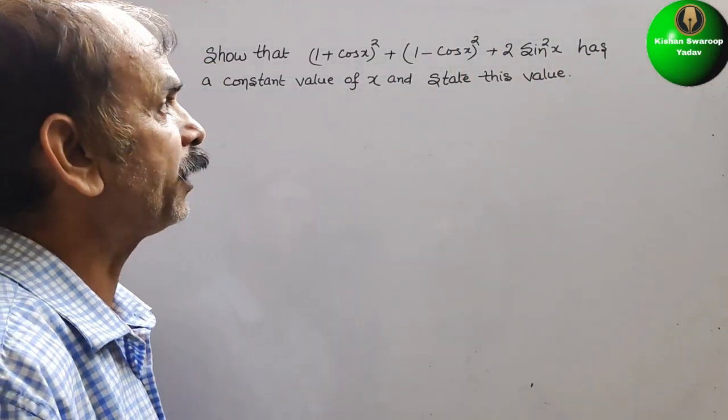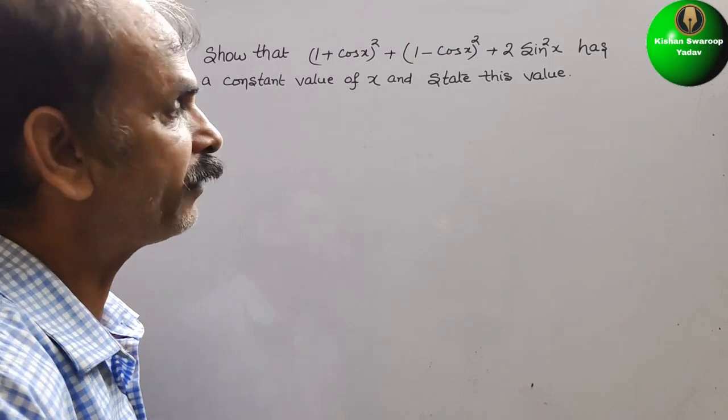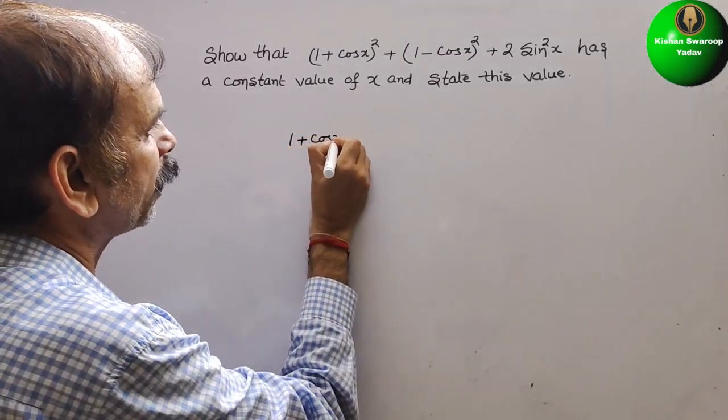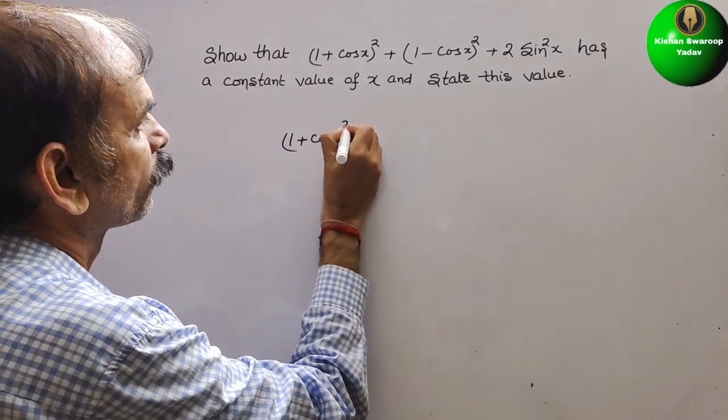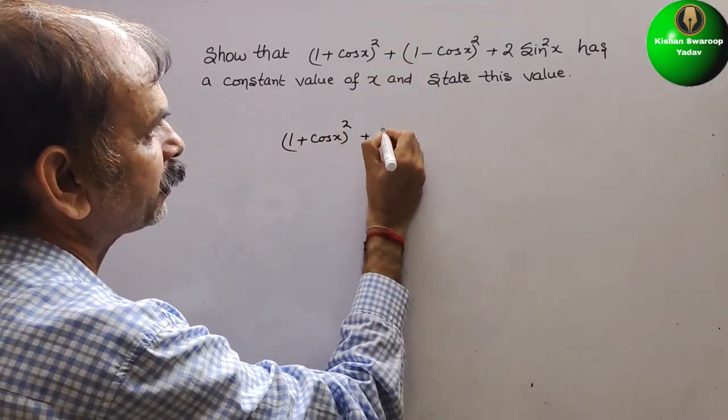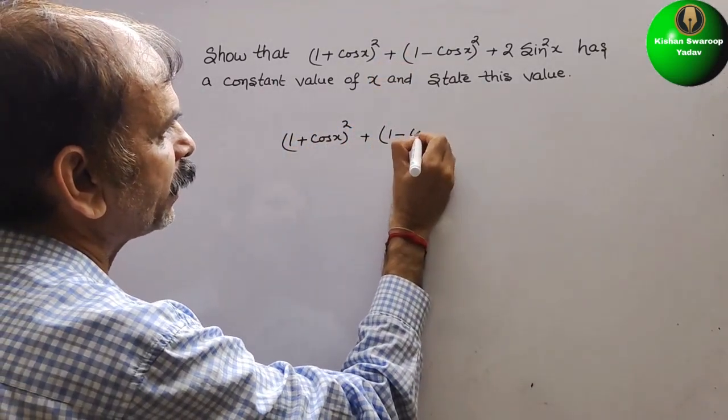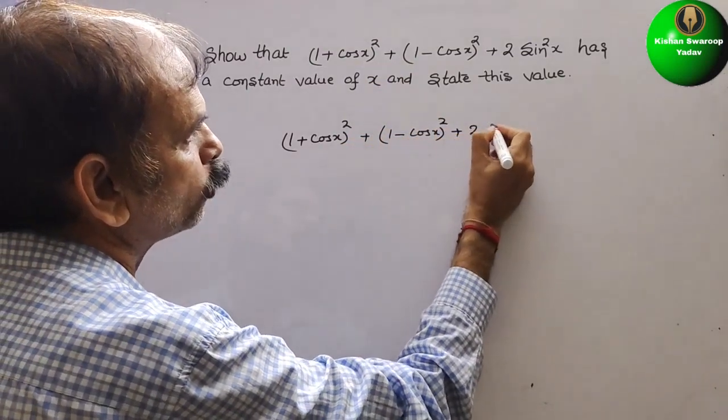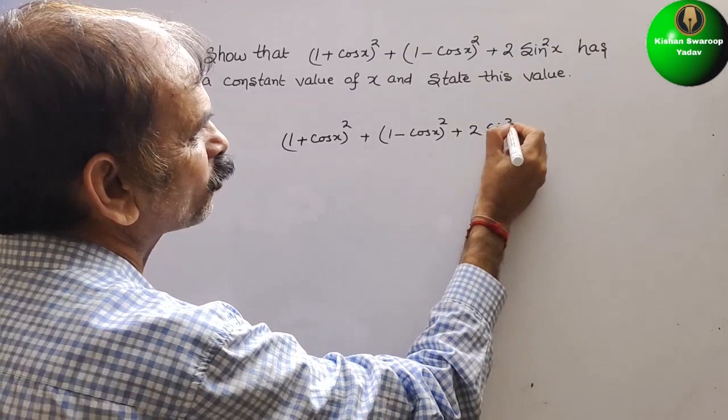So see that, what they have given. They have given that (1+cos x)² plus, next is (1-cos x)² plus 2sin²x.